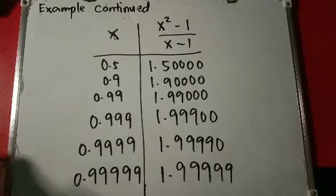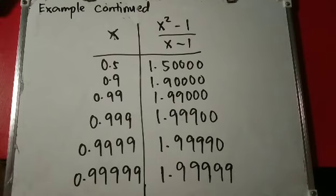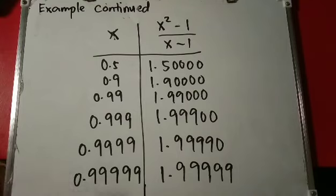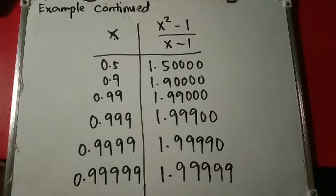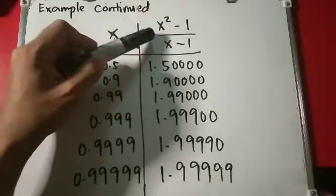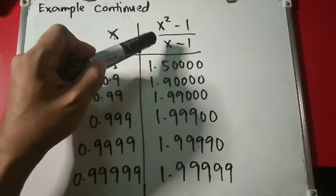So we are now faced with an interesting situation. When x equals 1 we don't know the answer, because if you try to substitute x equals 1 directly it is indeterminate. But we can see that it is going to be 2. So mathematicians say exactly what is going on by using the special word limit: the limit of x squared minus 1 over x minus 1 as x approaches 1 is 2.